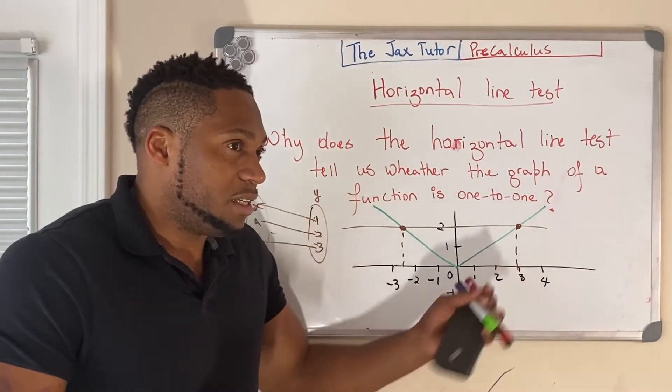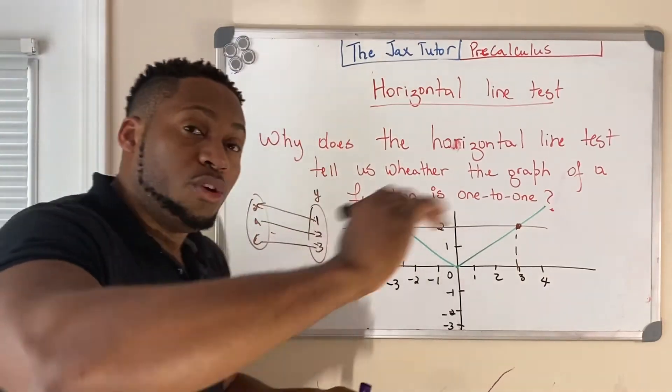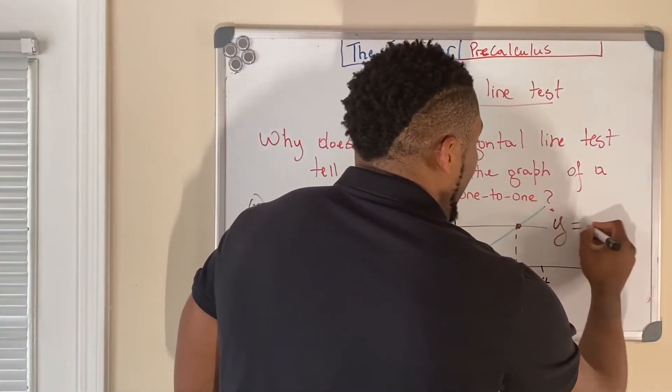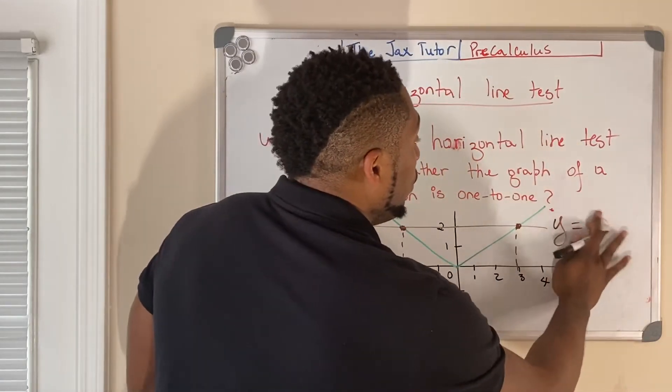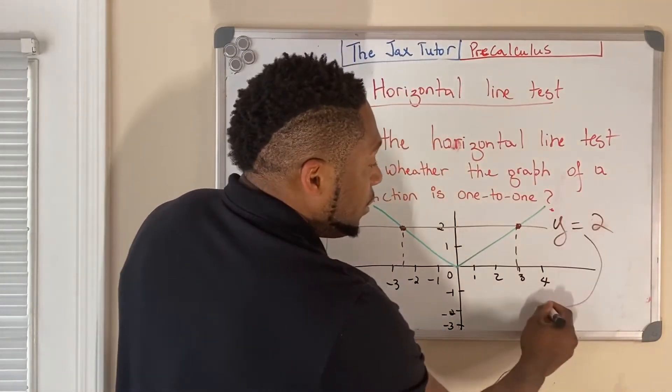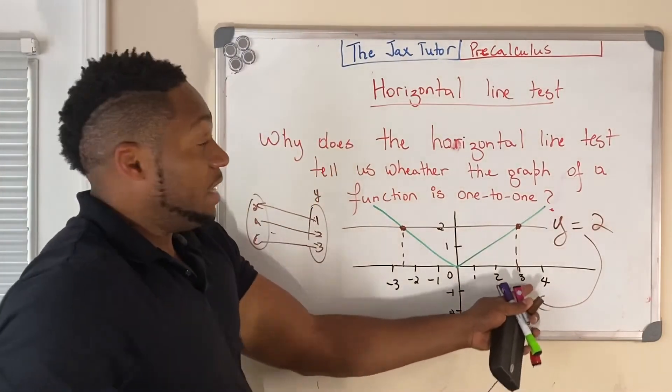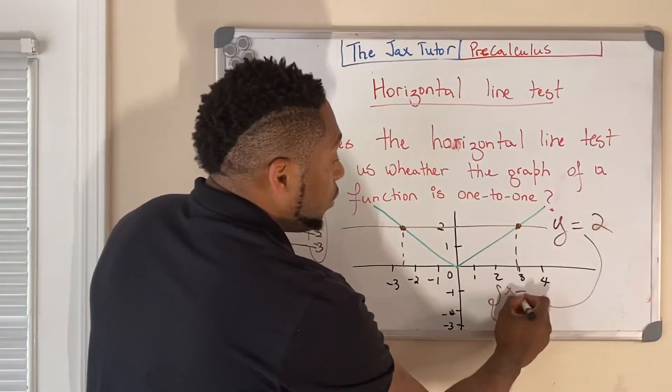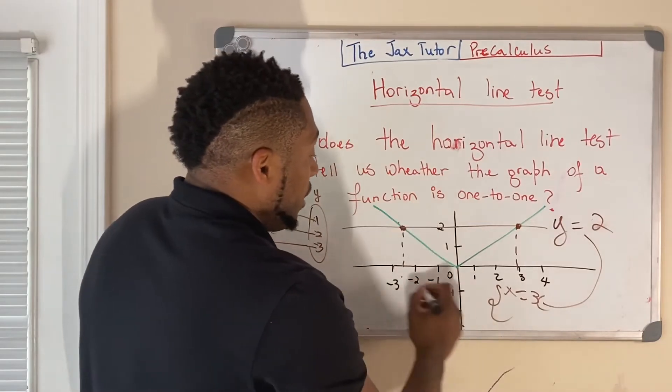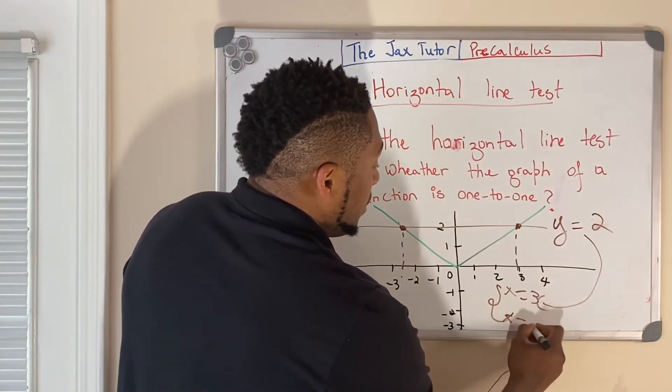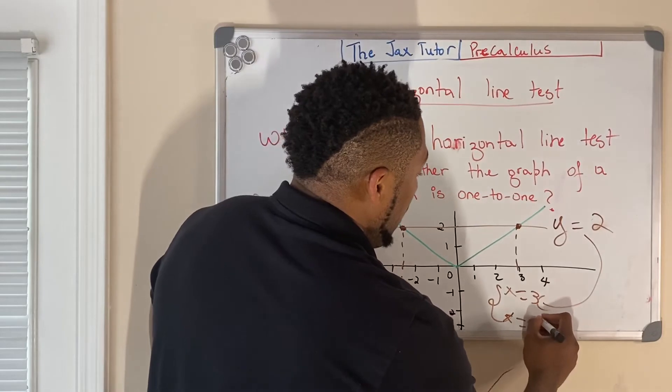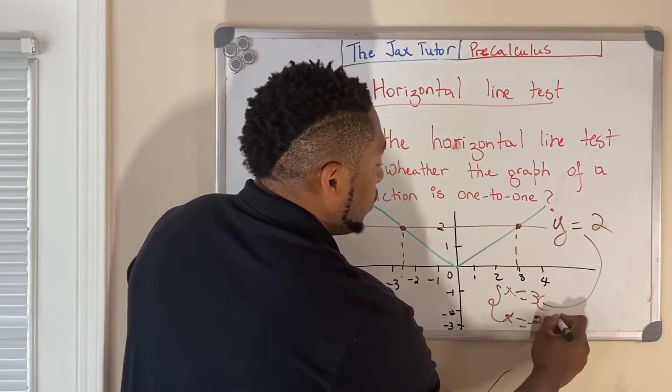So, what this tells us is this y, because you know the horizontal line, the equation of the horizontal line, y here is equal to 2. So, that means for y is equal to 2, there are two x values associated with it. In that case, x is equal to 3 and x is equal to negative 2.5 here.